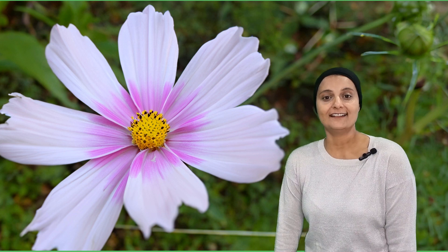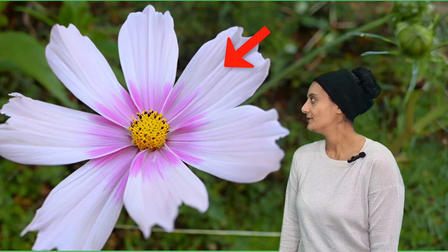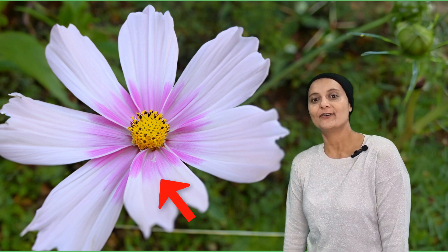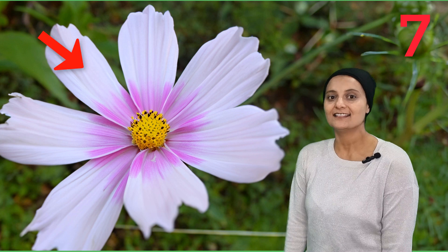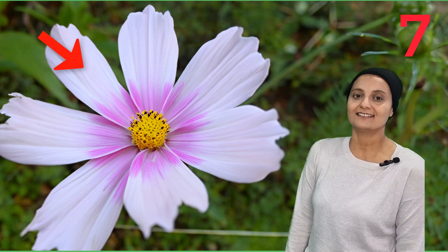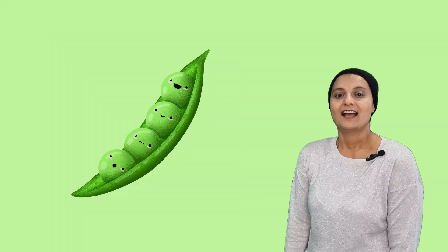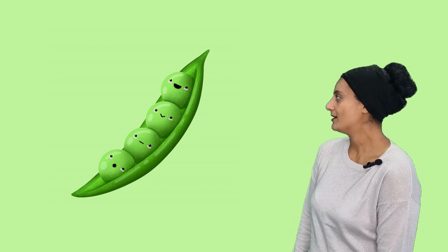How many petals on a flower? We can find this time. One, two, three, four, five, six, seven. Seven petals.